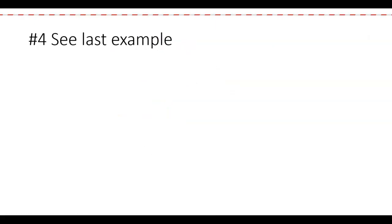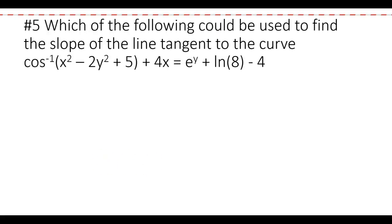Question 4 is another arc trig problem — refer to the last example. Question 5 uses arccos, written with a negative 1 exponent notation. This one is different because it's also an implicit function, meaning there are y's inside the equation as well. The question asks which expression could be used to find the slope of the tangent line, so we need to find the derivative.